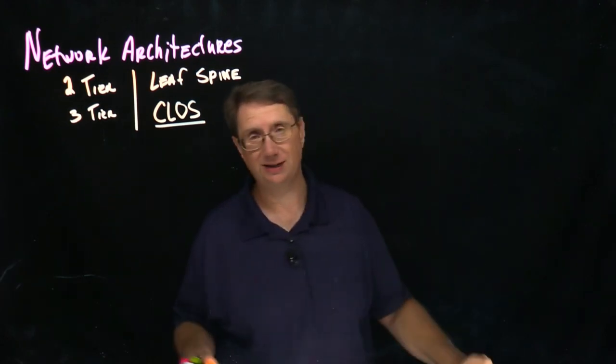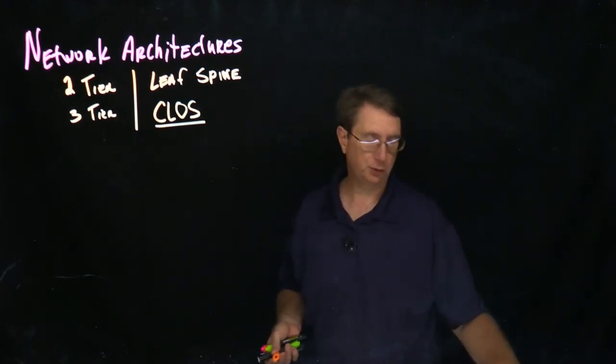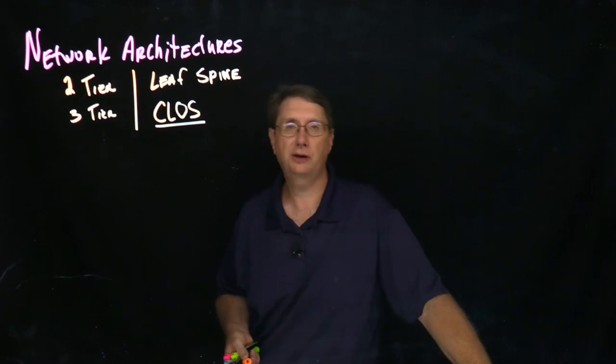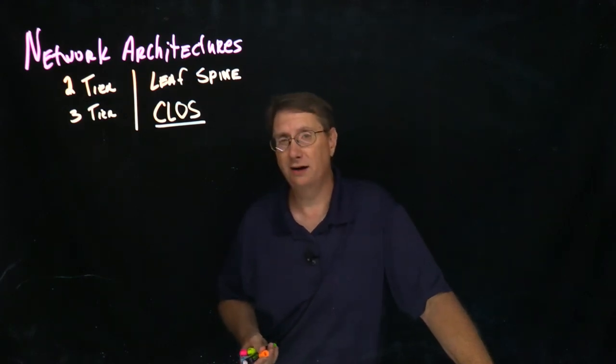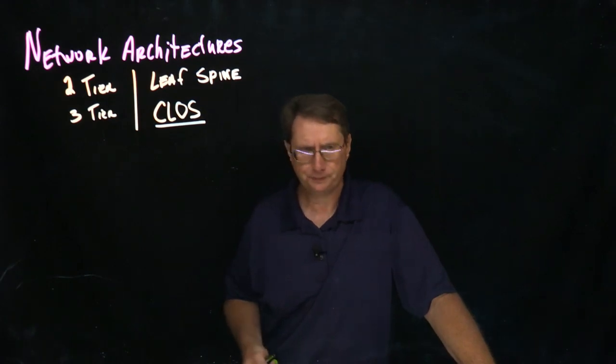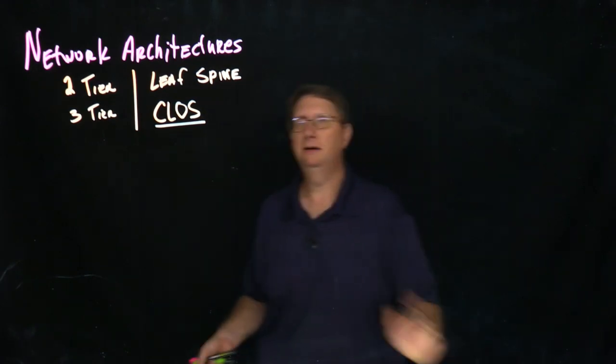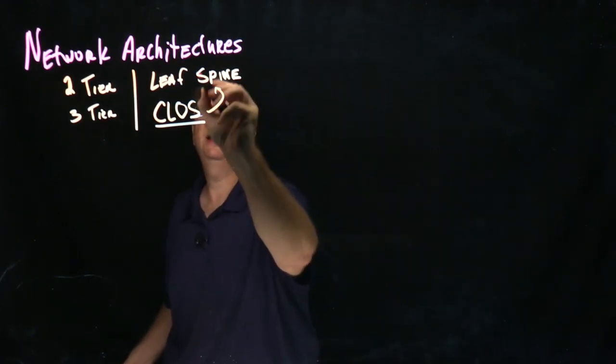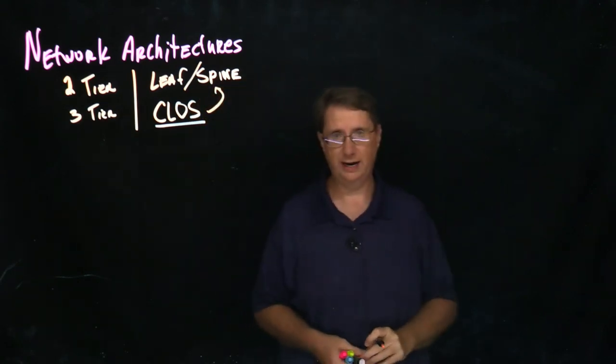Now that's not an abbreviation, it's actually a man's name. Charles Clos was a research engineer in the 1950s who created a non-head of line blocking crossbar fabric. Now basically it translates to this idea of a leaf spine architecture.